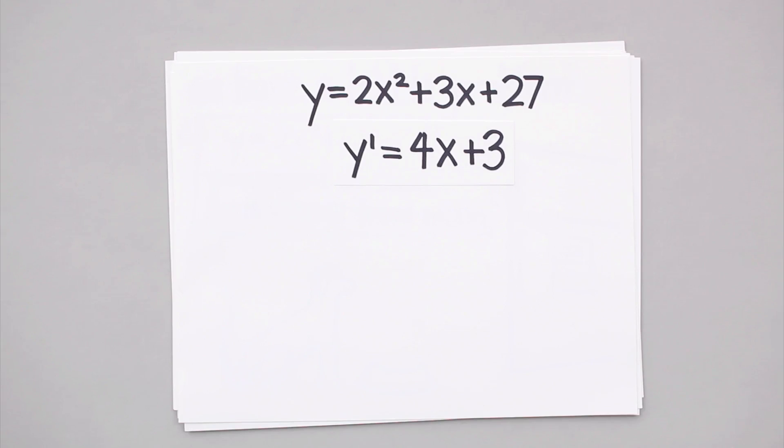The first thing we ask ourselves now is, is this derivative ever undefined? In this case, the derivative is always defined because the derivative itself is a polynomial function. So then we move on to ask ourselves, when will this derivative be equal to zero?